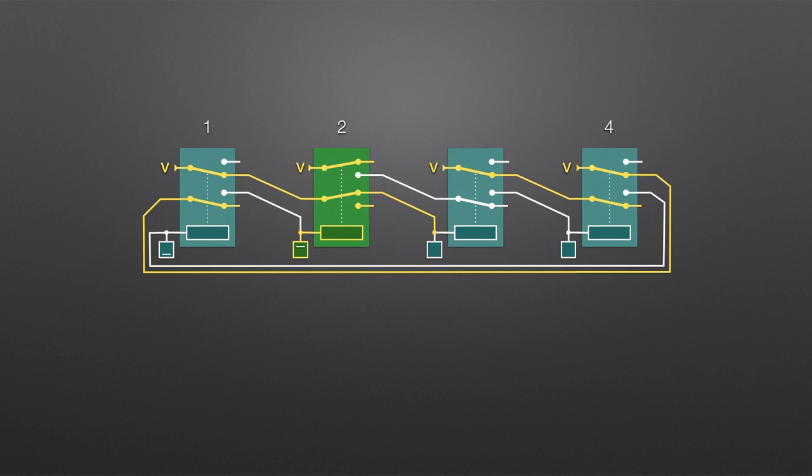After a short delay, determined by the resistor and capacitor values, the voltage across the coil of relay one drops below the minimum required to operate the contacts, and the relay turns off. This cuts power to relay two, but note also this now completes a circuit, providing power to relay three.